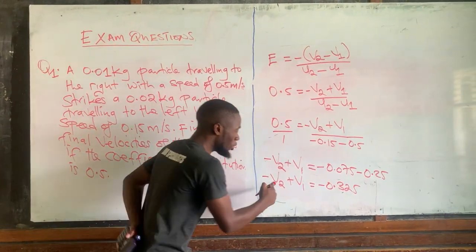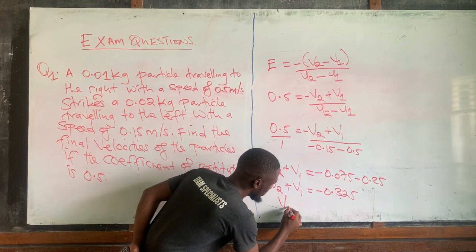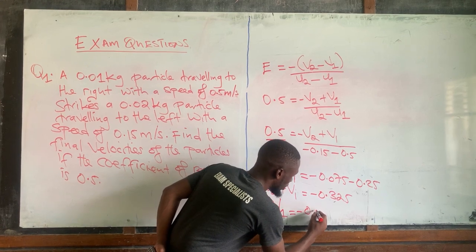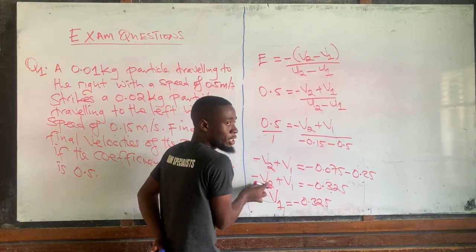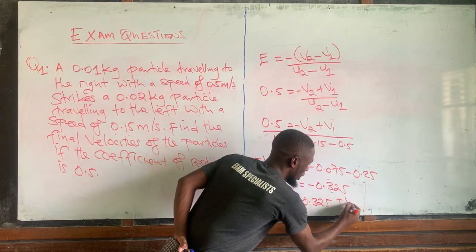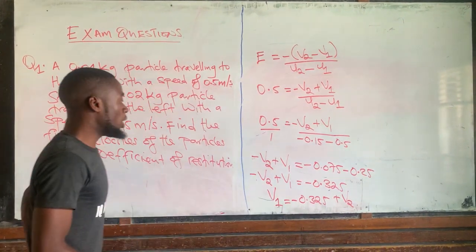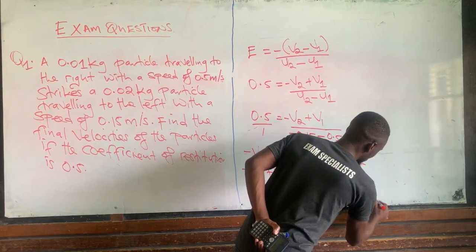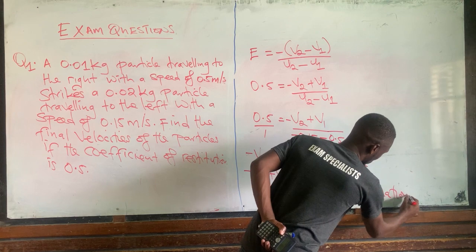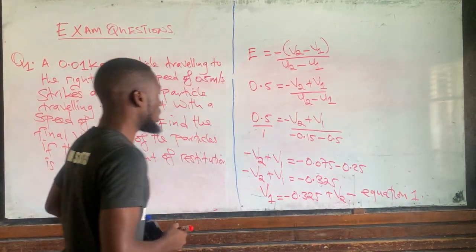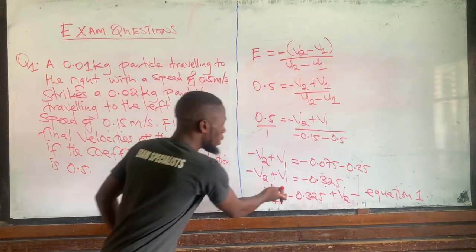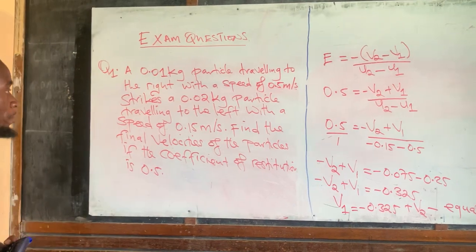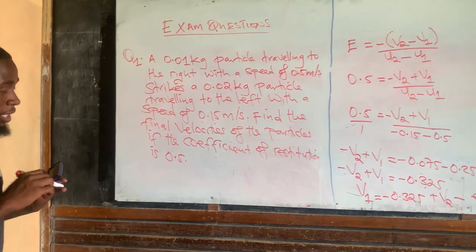Whatever we did to the coefficient of distribution equation, we should now do to the momentum equation. So let's now work with the momentum equation: m1·u1 plus m2·u2 equals m1·v1 plus m2·v2. We are going to make v1 the subject of the formula here as well.